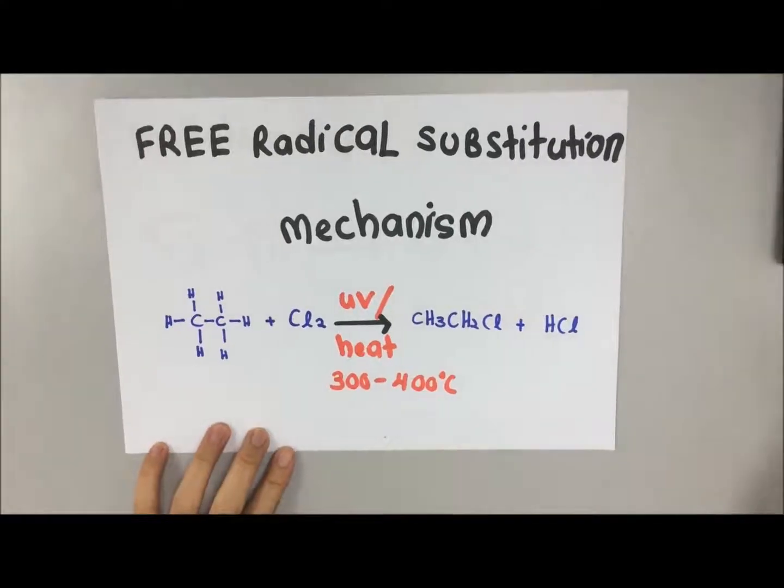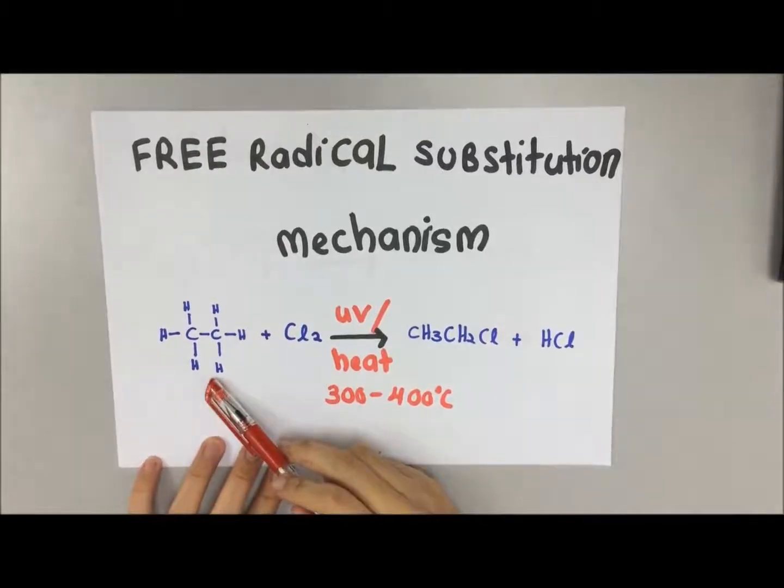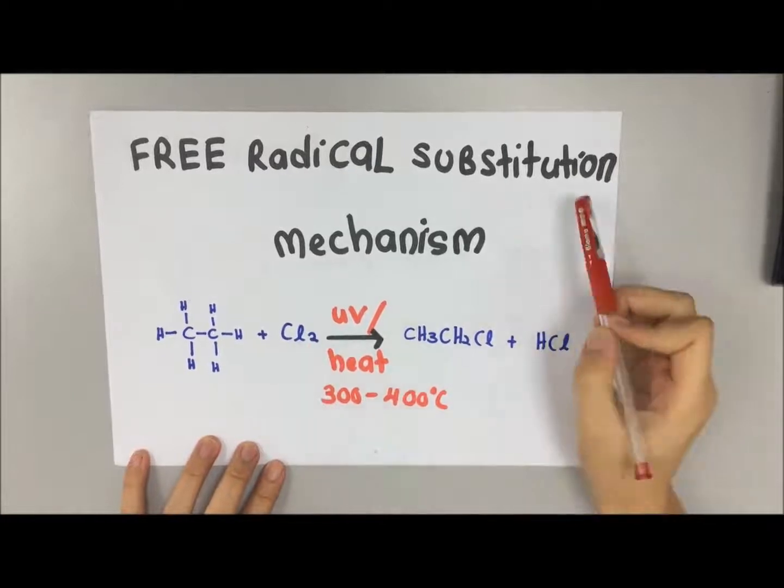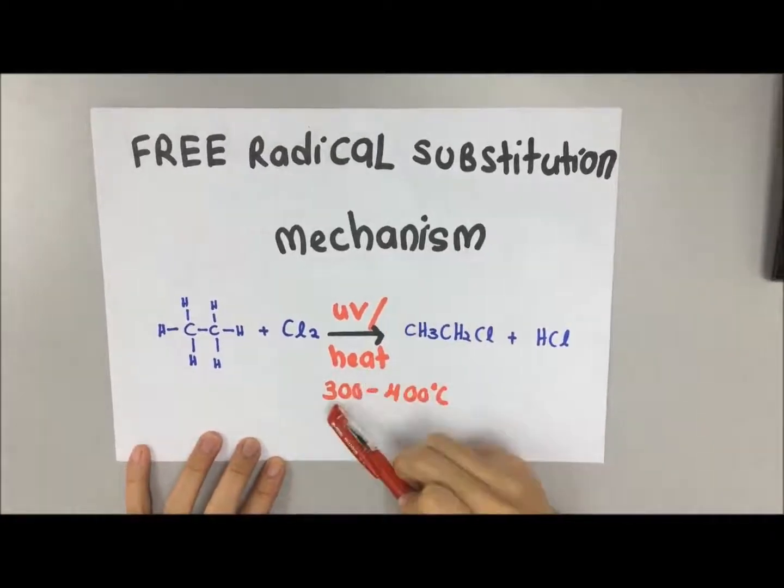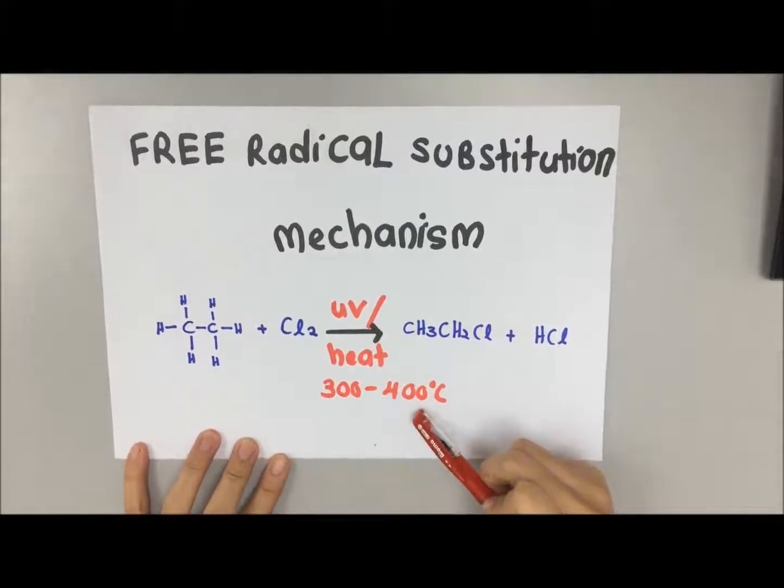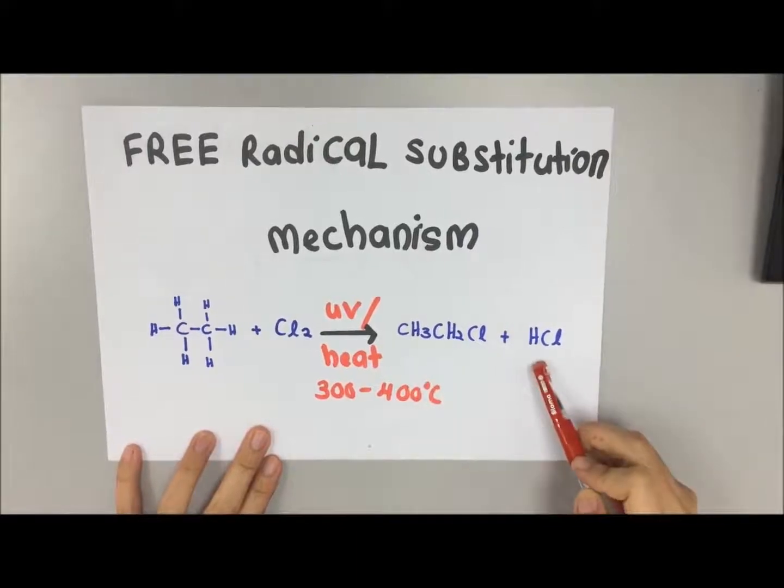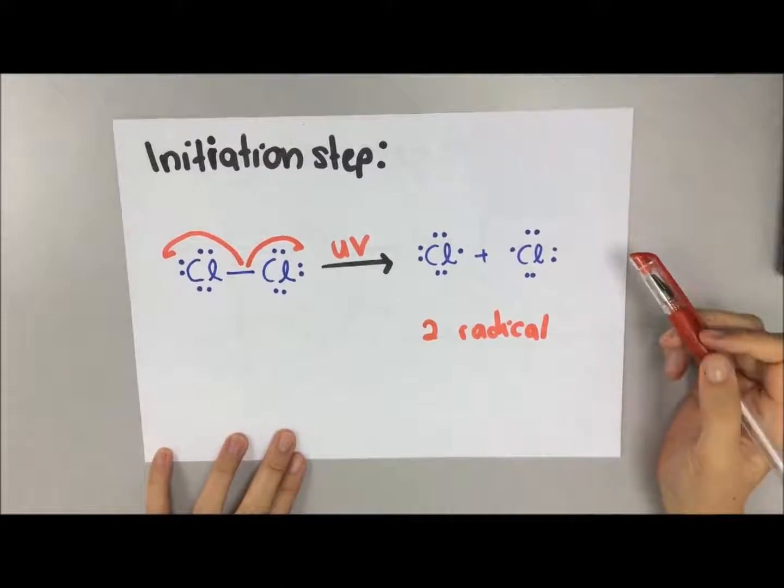Okay, today we will show you about the free radical substitution mechanism. From here we have ethane and chlorine gas. For the condition of free radical substitution, we need UV light or you can heat it from 300 to 400 degrees Celsius.